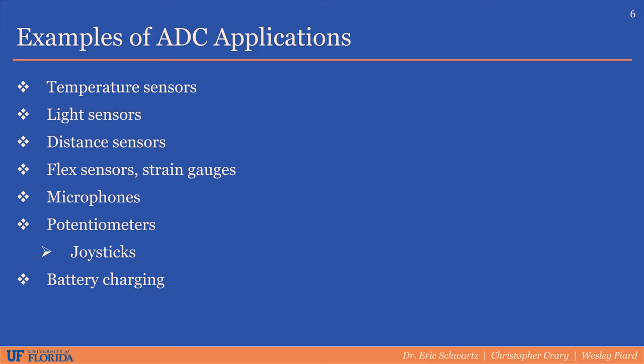Battery charging is more and more common nowadays. A lot of batteries consist of multiple cells, and when you charge a battery, you want to charge each cell such that they maintain the same voltage. One way to do that is to measure the voltage of each cell and charge each cell individually. Things like oscilloscopes or data acquisition in general use analog-to-digital converters to display analog signals on a digital screen.